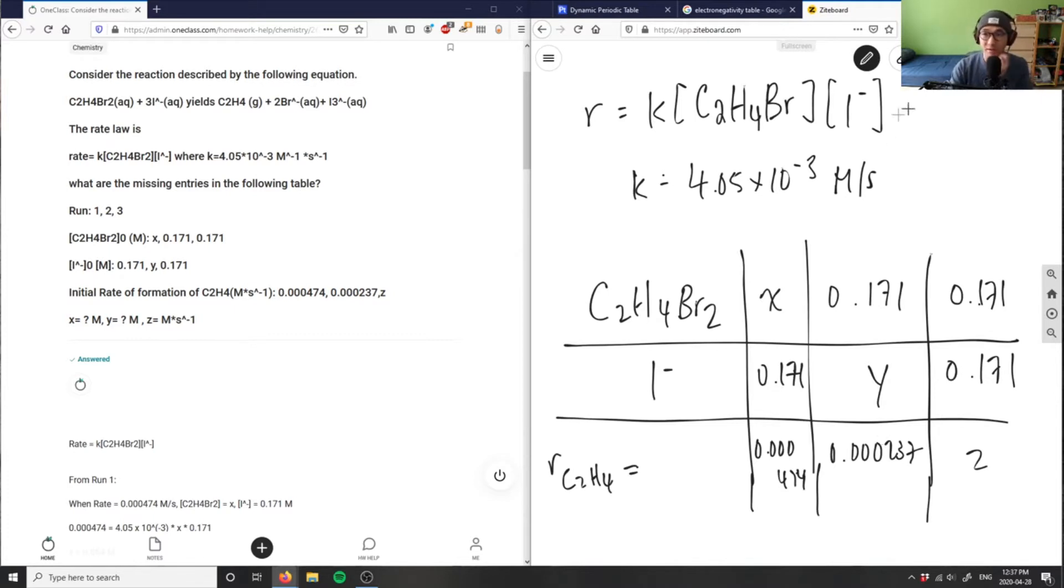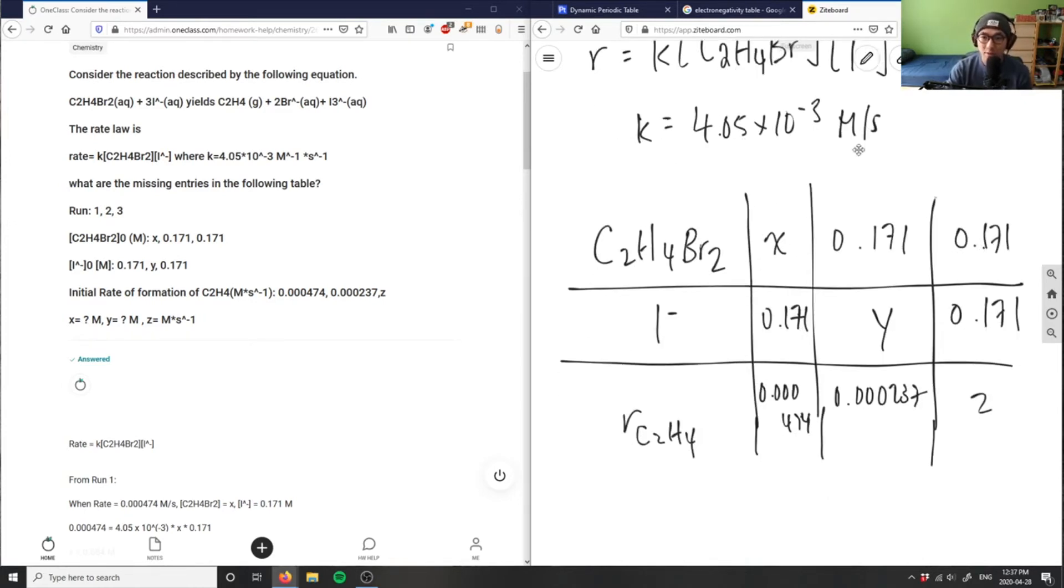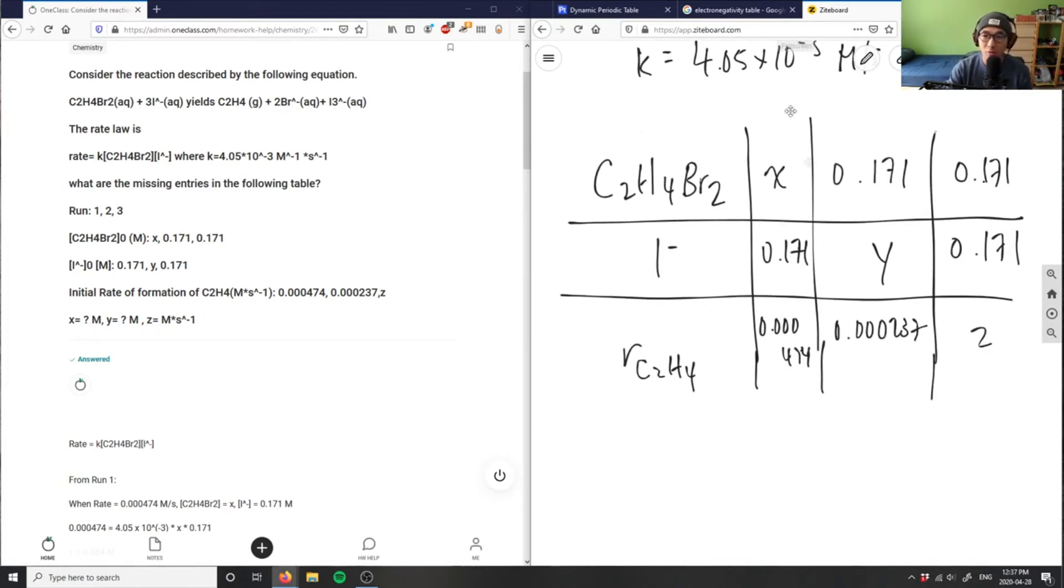So the formatting, again, very poor for this question, and I had to redraw the table, but it's totally fine here. I'm given the rate law and the K value. So all I have to do is basically just plug in these values here because I'm given the K value.